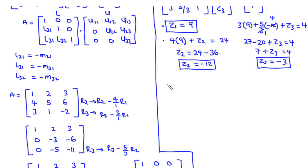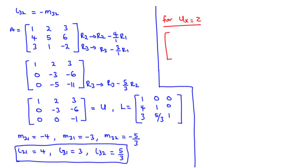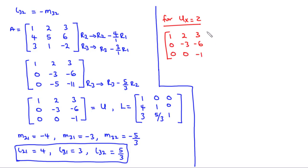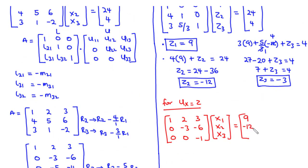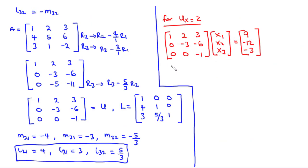Now we substitute these Z values into equation 2: UX equals Z. We have the upper triangular matrix times X1, X2, X3 equal to Z1 = 9, Z2 = negative 12, Z3 = negative 3. We do back substitution. From row 3: negative 1 times X3 = negative 3, so dividing by negative 1, X3 = 3.